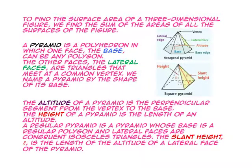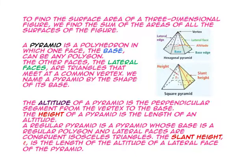To find the surface area of a three-dimensional figure, we find the sum of the areas of all the surfaces of the figure. A pyramid is a polyhedron in which one face, the base, can be any polygon. The other faces, the lateral faces, are triangles that meet at a common vertex. We name a pyramid by the shape of its base.